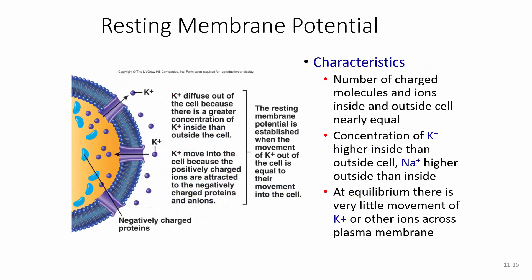Now, resting membrane potential: the number of charged molecules and ions inside and outside the cell are nearly equal. The concentration of potassium is higher inside the cell, and sodium is higher on the outside — both are positively charged. But at equilibrium, there is very little movement of potassium or other ions across the plasma membrane.